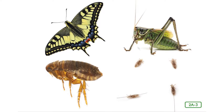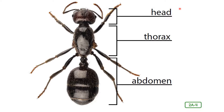We'll use one of my friends, the ant, as an example. All insects have a head, a thorax, and an abdomen. The head is the center of an insect's senses, but different kinds of insects can have very different looking heads. The thorax is the middle part of the insect's body. The abdomen is the end of the insect's body, farthest away from the head.